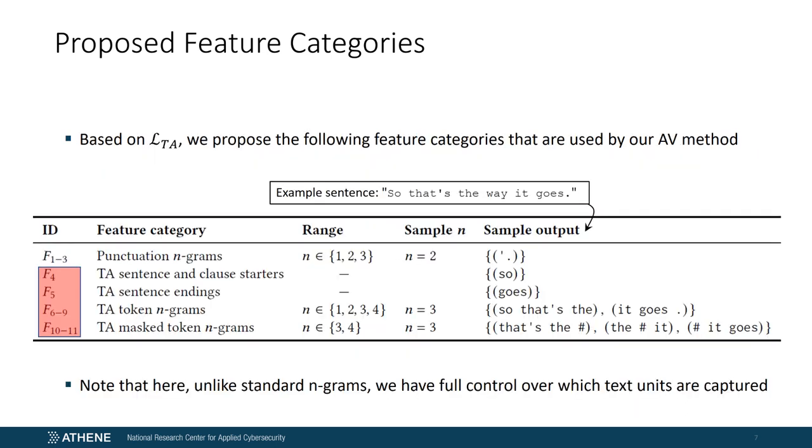Based on this list, we now present a number of feature categories that will be used by our AV method. These are punctuation n-grams, TA sentence and clause starts, TA sentence endings, TA token n-grams, and TA masked token n-grams. But before explaining them, it's important to note that for the n-gram-based feature categories, we consider fixed ranges of values. An explanation why we have chosen the specific values is described in our paper in more detail. Furthermore, it should be highlighted that each setting of n results in a distinct feature category, so that in total we have 11 feature categories where the IDs are shown in the left column. To get an idea what these features now in fact capture, we look at the following example sentence: so that's the way it goes.